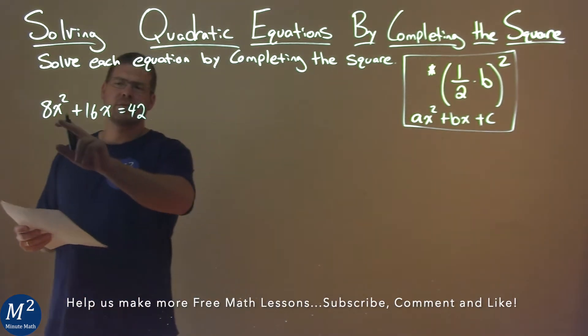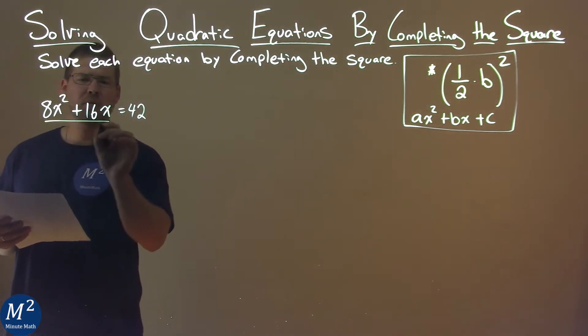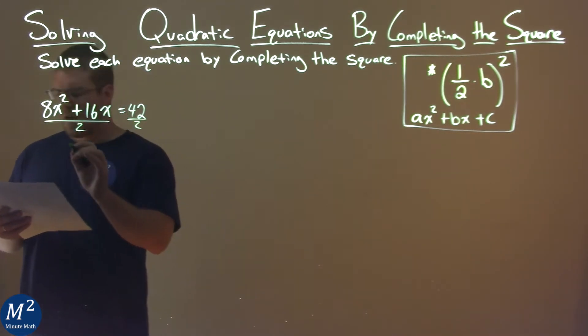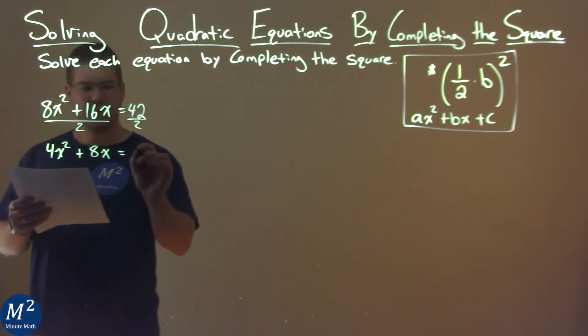One thing I notice is each one of these coefficients is divisible by 2, so I'm going to divide both sides by 2. I'm left with 4x squared plus 8x equals 21.